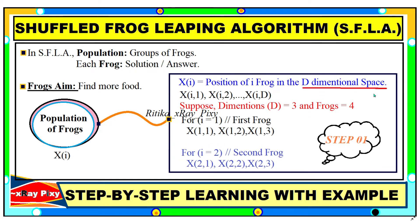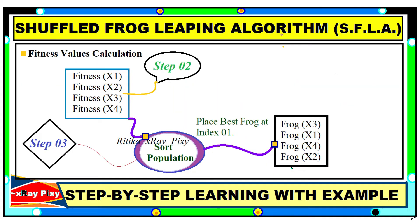We have a d-dimensional space — just imagine we have three dimensions. So the final position for the first frog is one value, for the second frog another, and so on. In step two, we calculate the fitness value for each frog, and once calculated, we sort the population according to their fitness value. We place the best frog at the first rank. For example, if the third frog has the best value, we place it at the first position.